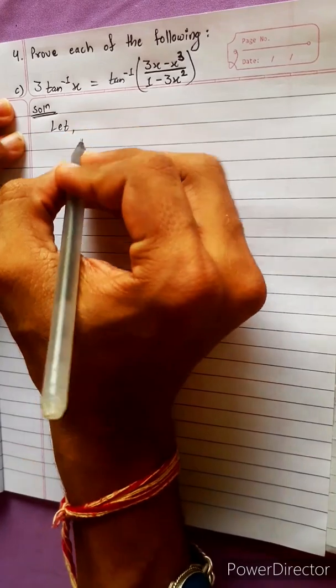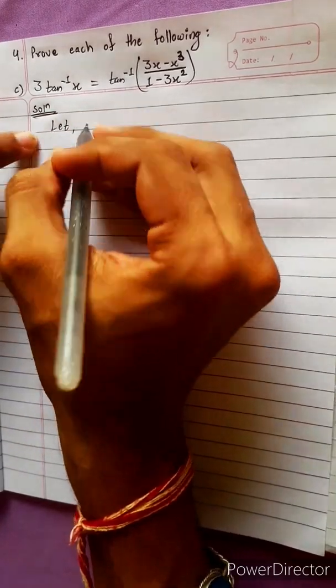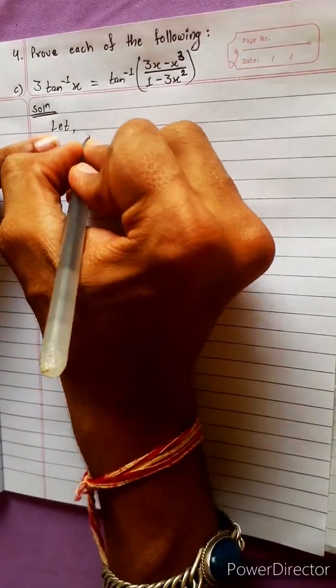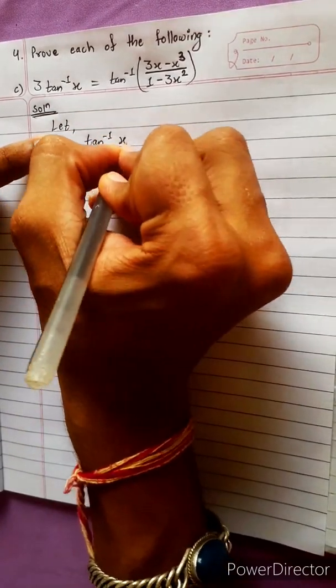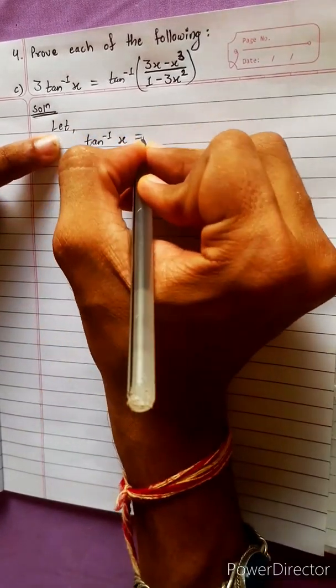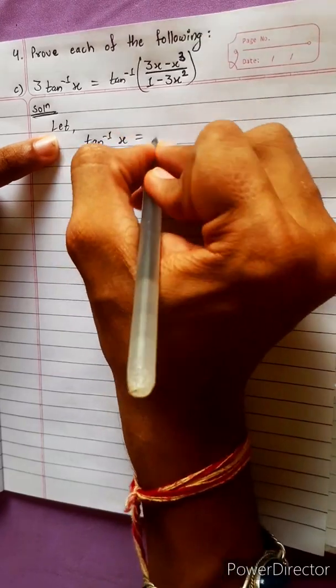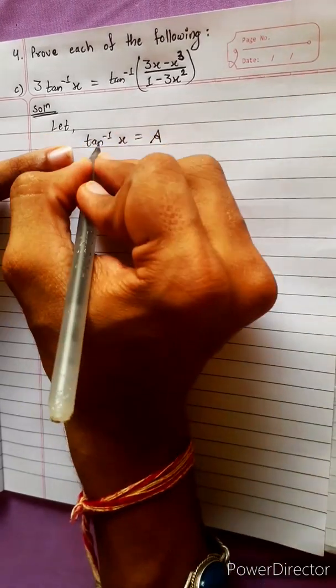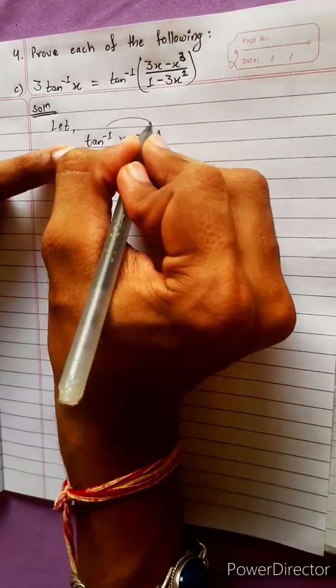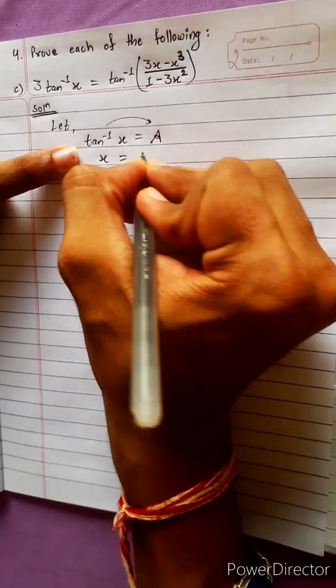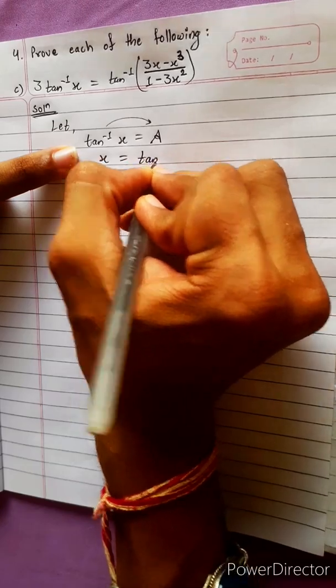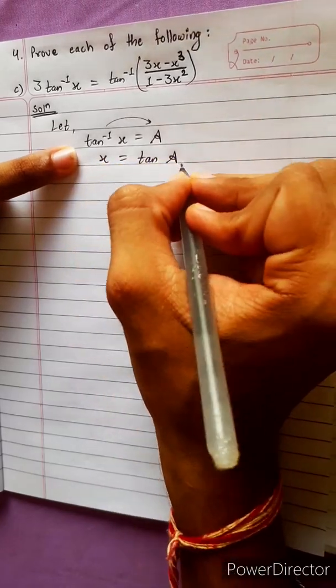We need to start. tan⁻¹(x) equals a. We need to transfer — so x equals tan(a).